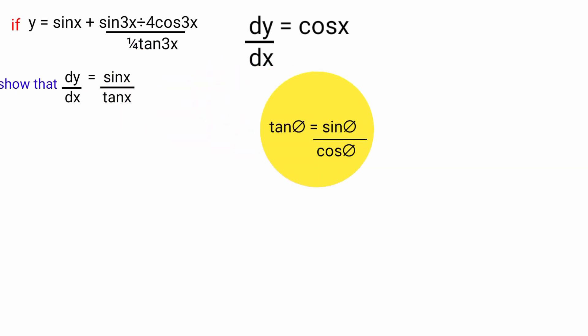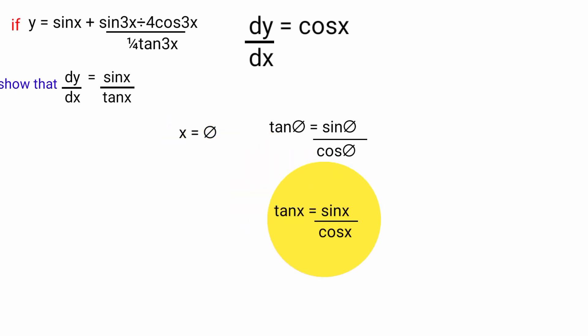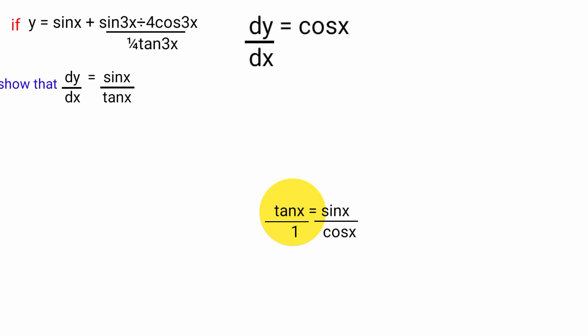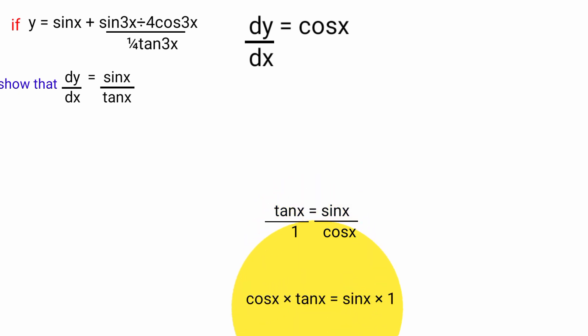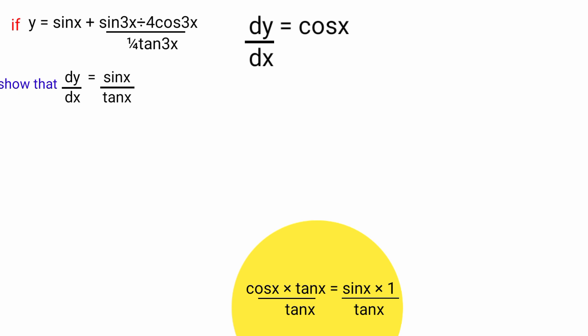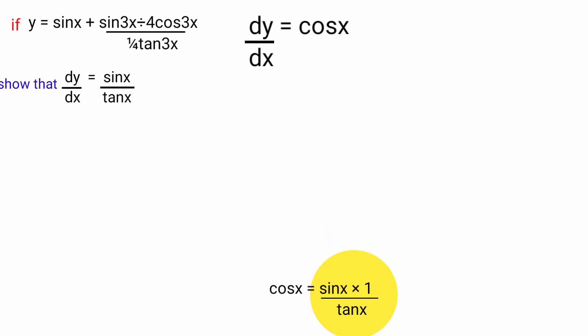Recall that tan θ equals sin θ over cos θ. Letting x equal θ, tan x equals sin x over cos x, which is the same as tan x over 1. Cross multiplying gives cos x times tan x equals sin x. Dividing both sides by tan x, the tan x cancels on the left, giving cos x equals sin x over tan x.